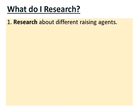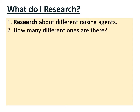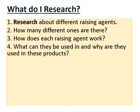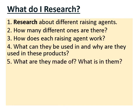Here is a helpful list of what you should be researching for this task. After your mind map, research the different raising agents: how many are there, how does each one work, what does each one do for certain products, and why are they used? For example, why do we use baking powder, bicarbonate of soda, or yeast in certain foods? What are they made of at a molecular level — what's in them that makes them work? Also consider whether they can be used for anything other than cooking.